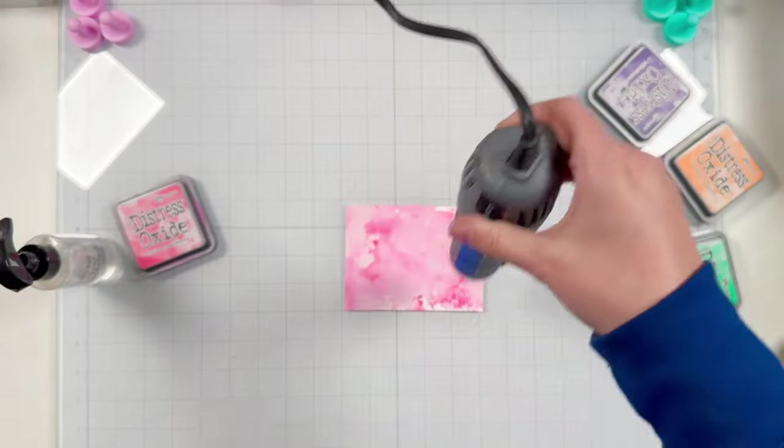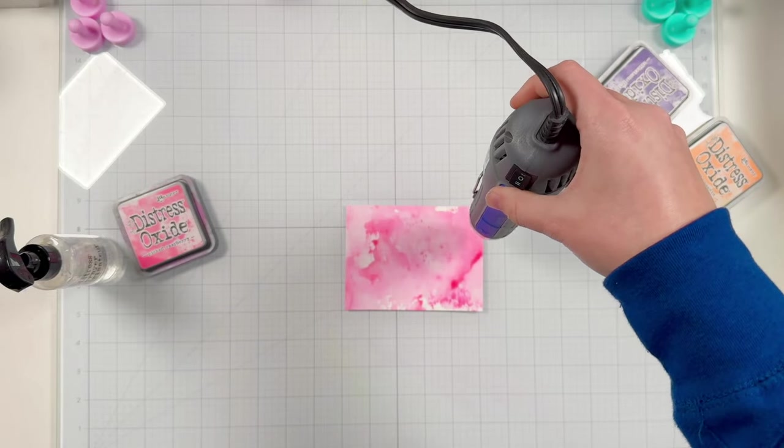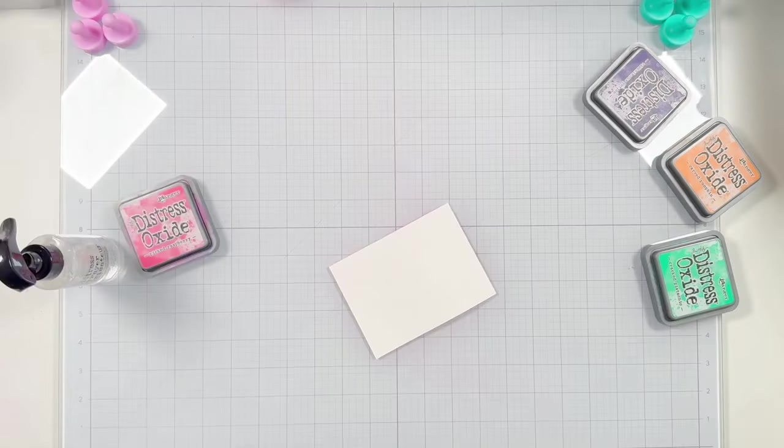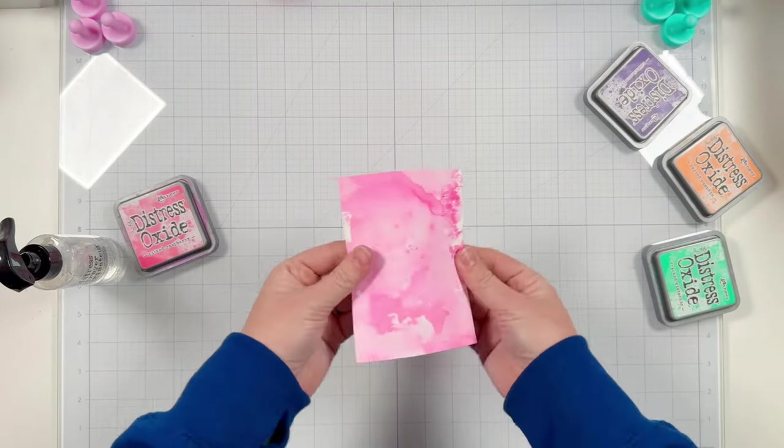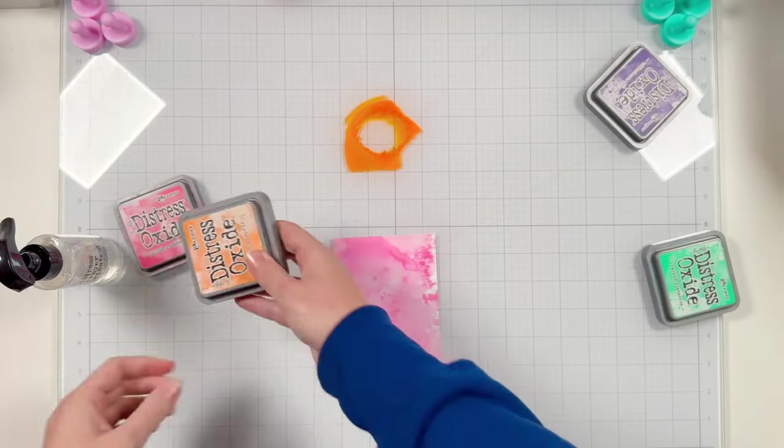I've started off with picked raspberry and then I'm going to move on to my next color which is carved pumpkin. I had looked up pictures of lava lamps to inspire my color choices today so these were the colors that I thought would look really well on the background.